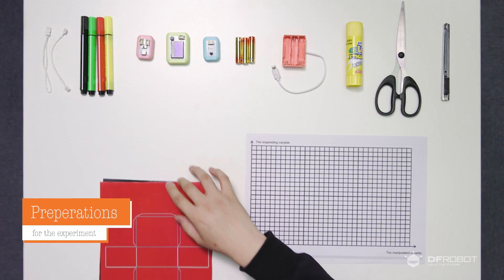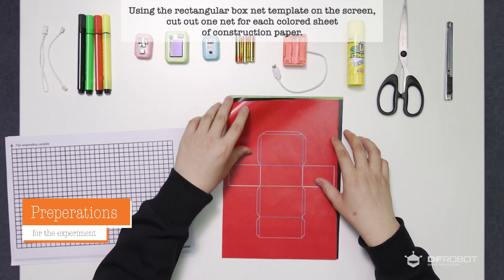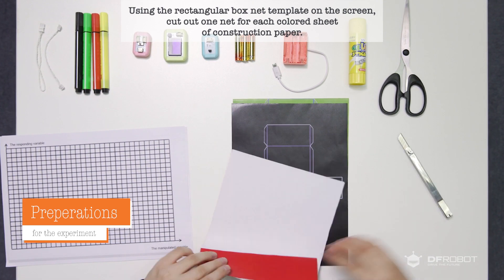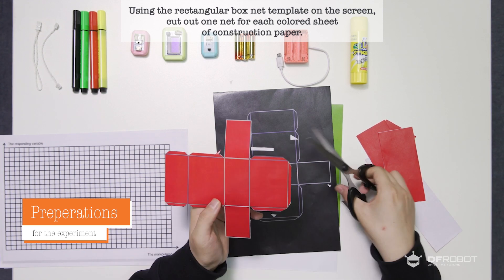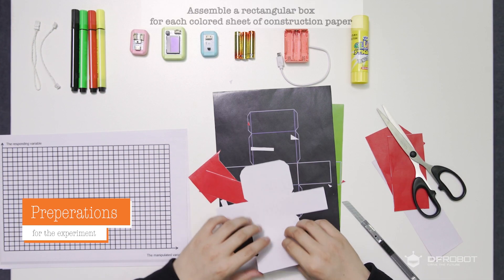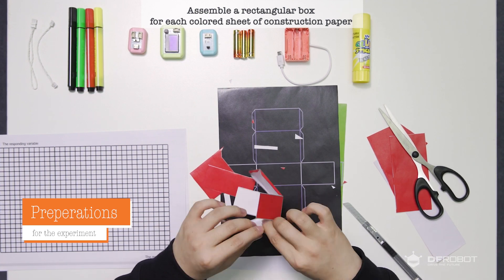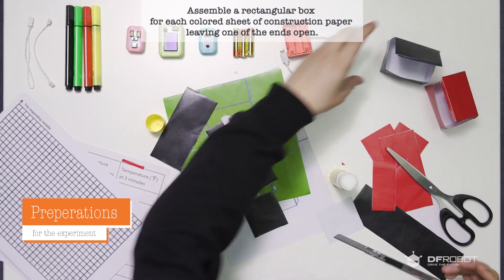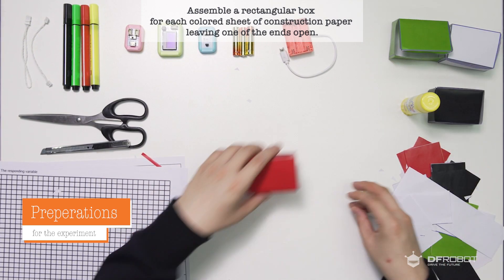And we need to make the following preparations. Using the rectangular box net template on the screen, cut out one net for each colored sheet of construction paper. Assemble a rectangular box for each colored sheet of construction paper, leaving one of the ends open. Set the rectangular box aside.